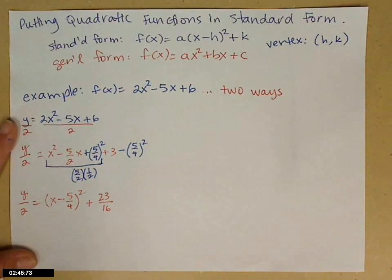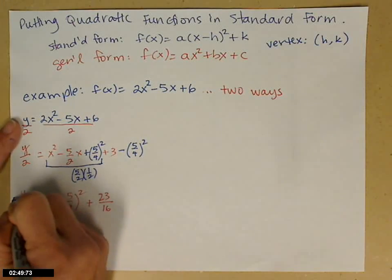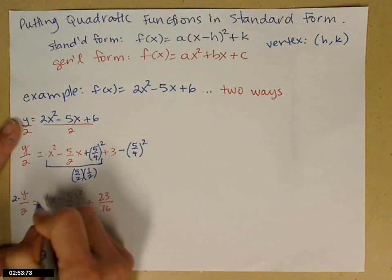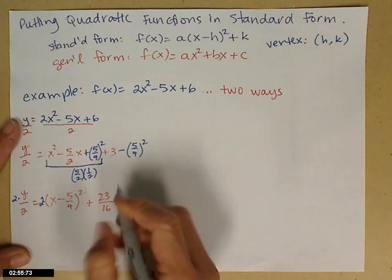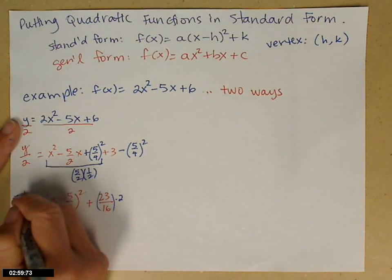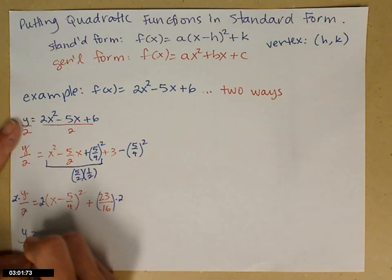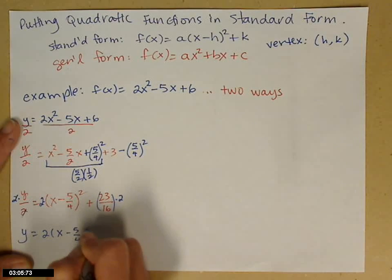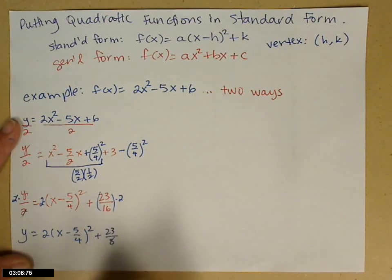Almost done. One more step. That's to bring the 2 back across. So multiply both sides by 2. It's going to cancel on the left. On the right, one goes in front of your parentheses, and one multiplies the constant term. There's my y: 2 times x minus 5 fourths squared plus 23 eighths.